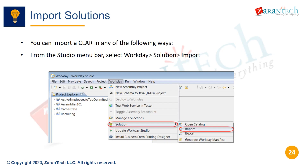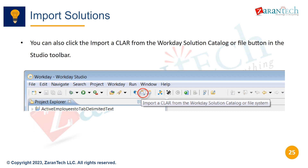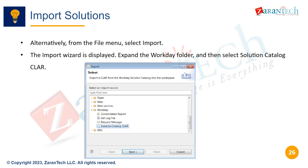There are a few ways to import a CLAR into Workday Studio: from the Studio menu, select Workday > Solution > Import; use the import button in the Studio toolbar; or from the File menu, select Import. To import a CLAR, click the import button in the Studio toolbar, or from the File menu select Import, expand the Workday folder, and select Solution Catalog CLAR. When you select to import a CLAR, the import wizard opens — browse to select a CLAR from the catalog or file system, then click Open to load the CLAR manifest information.